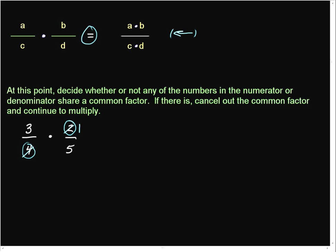4 divided by 2 is 2. Now, when we go through the multiplication process, we have 3 times 1, which is 3, and 2 times 5, which is 10.